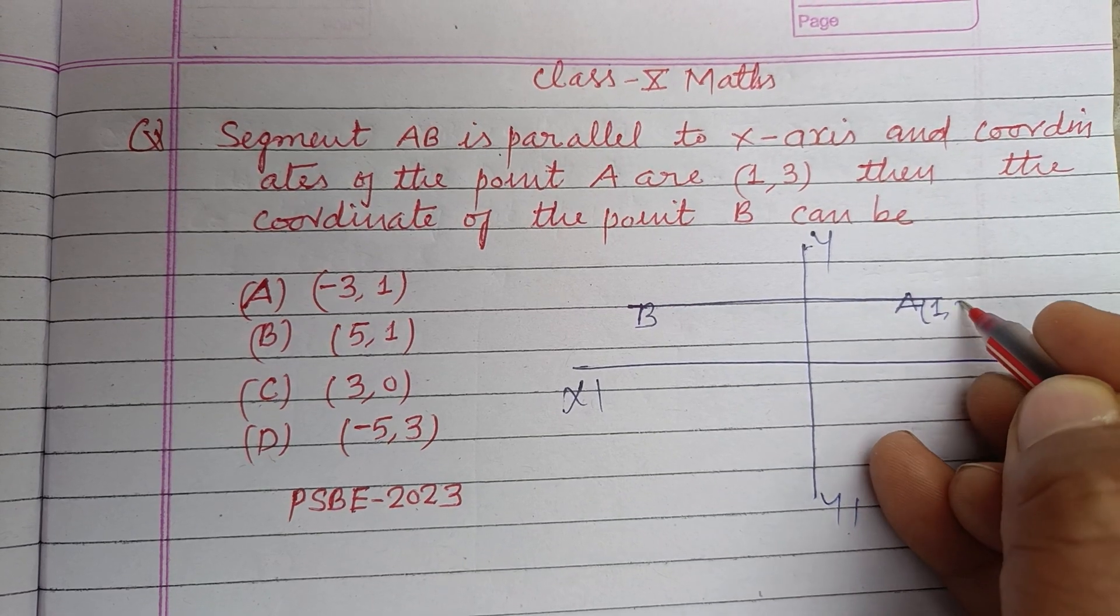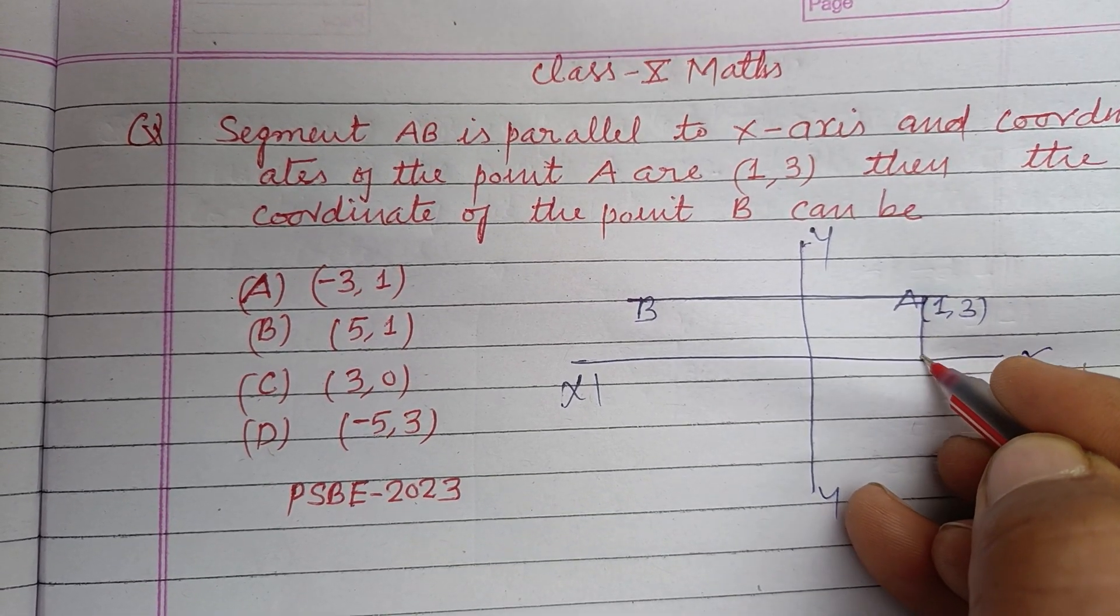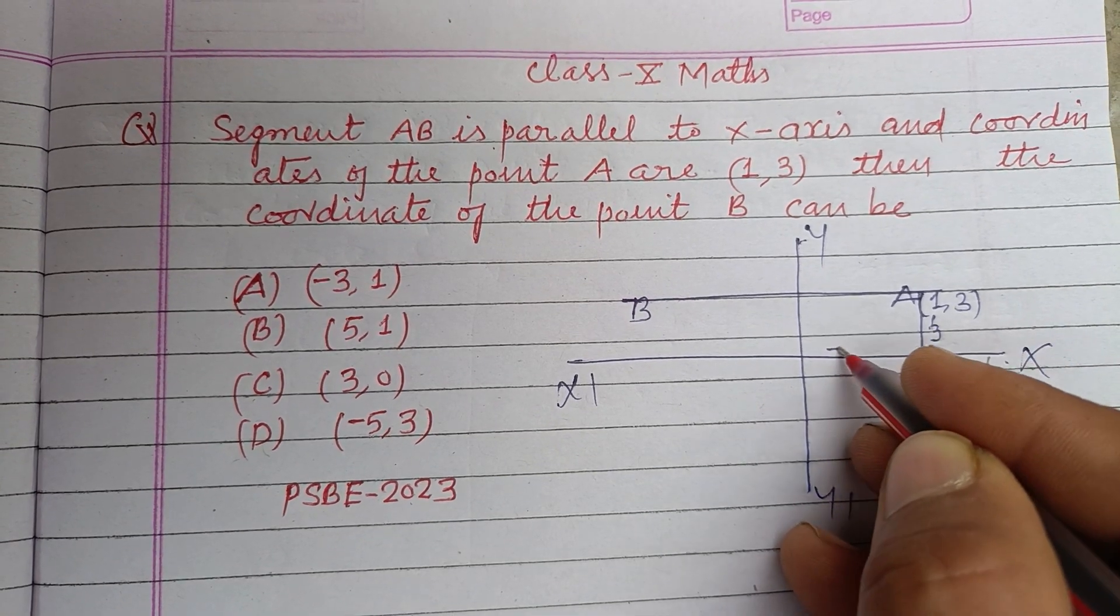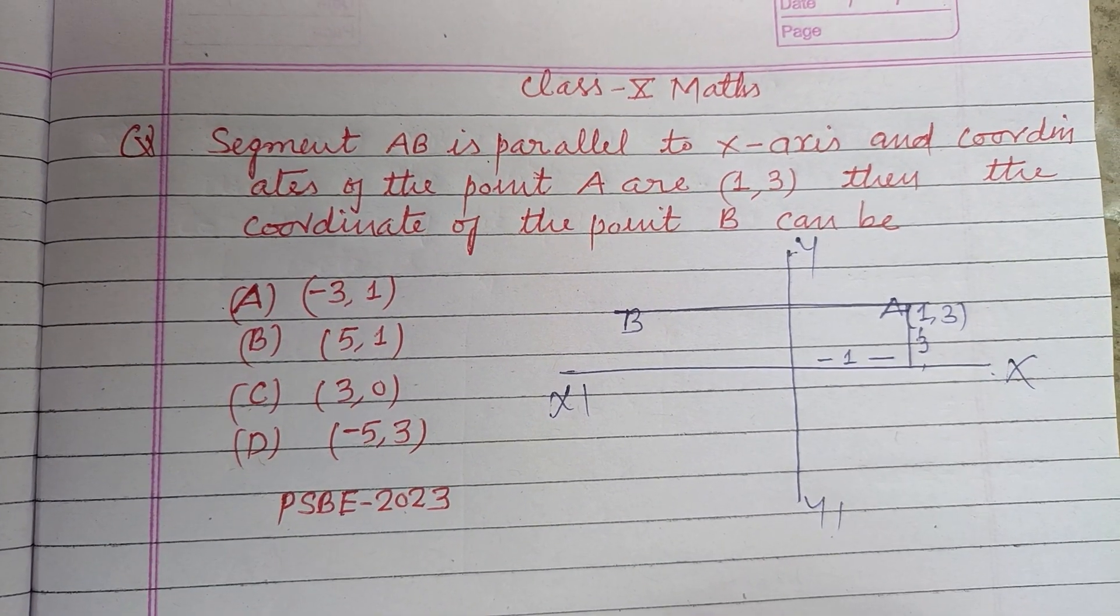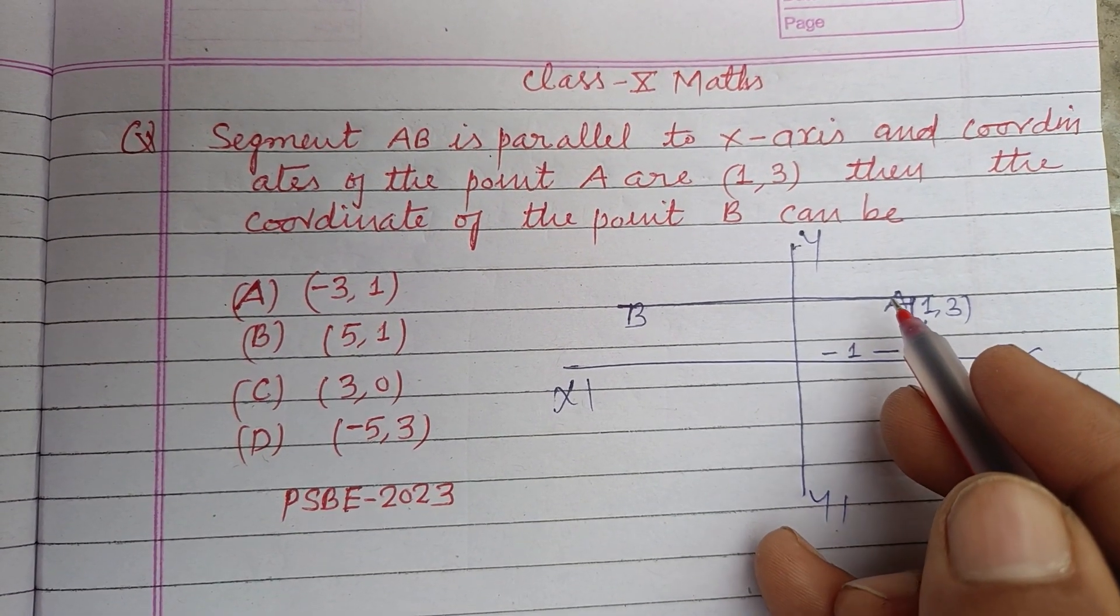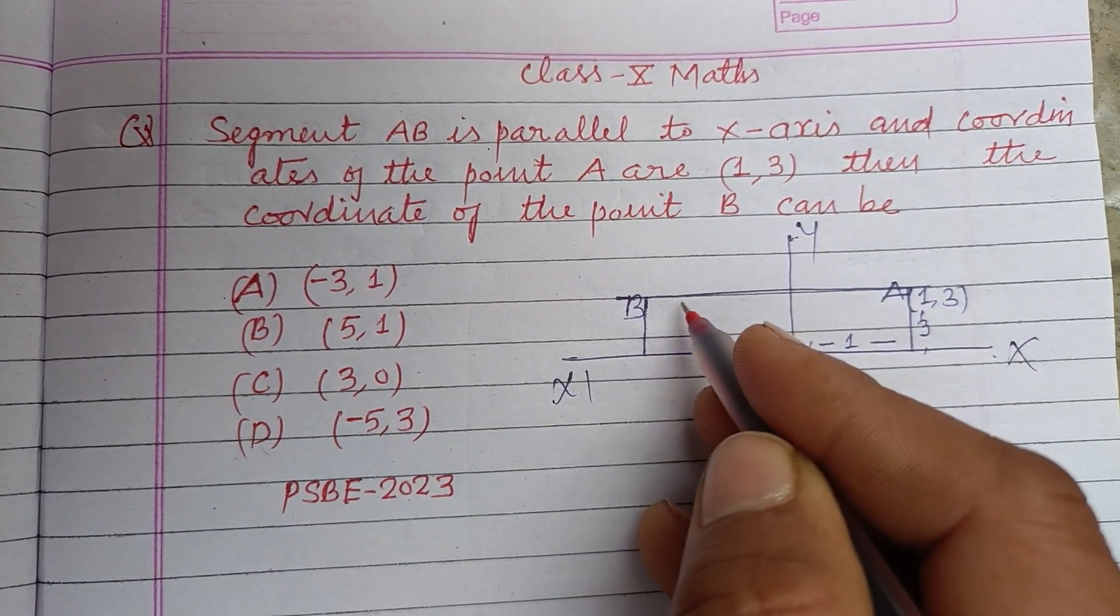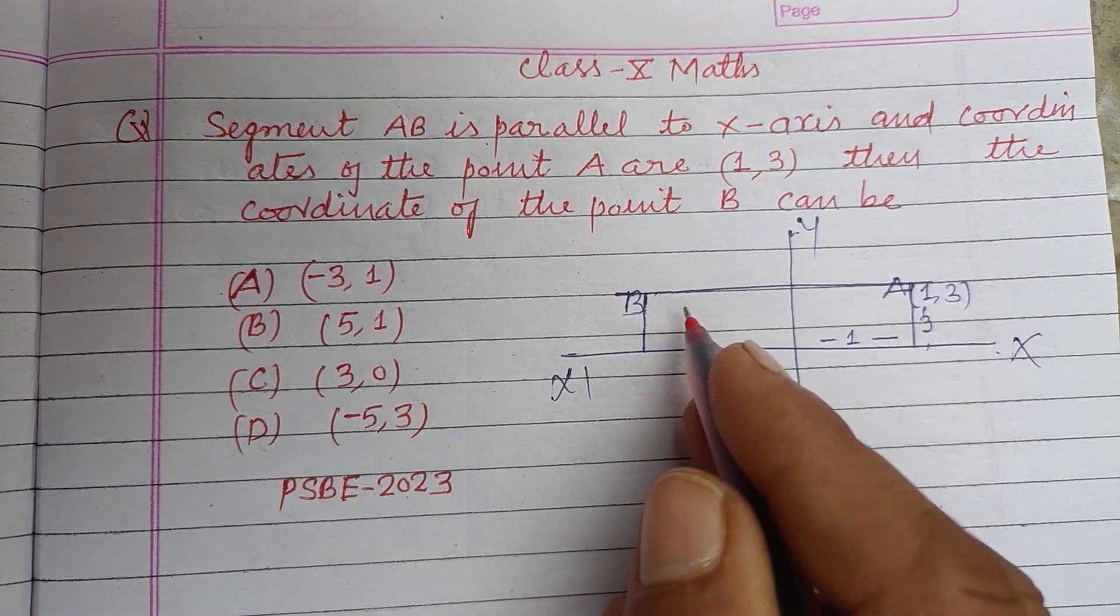A is given to us as (1,3). It means if we draw a perpendicular to x-axis, this is 3 and this is 1. Okay, so the distance of point B - since it is parallel and parallel lines have equal distance from the x-axis.